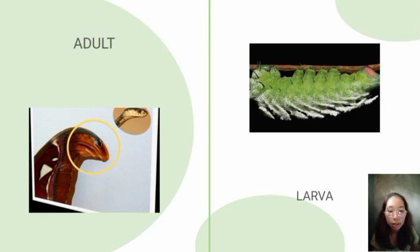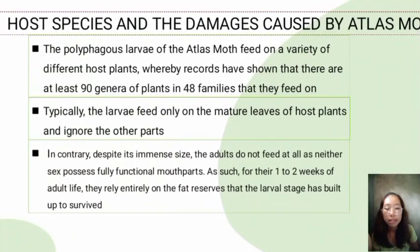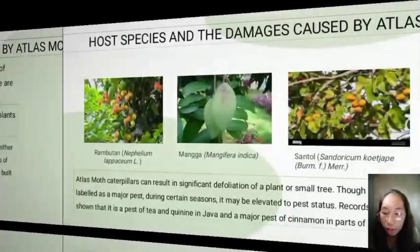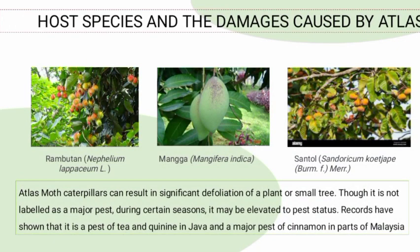Here we have pictures showing how the adult and larva protect themselves from predators. Regarding host species and damages caused by the atlas moth: the polyphagous larvae feed on a variety of host plants — typically only on mature leaves — ignoring other parts. Host plants include Nephelium lappaceum, Mangifera indica, and Sandoricum koetjape. Atlas moth caterpillars can result in significant defoliation of a plant or small tree. Though it is not labeled as a major pest, during certain seasons it may be elevated to pest status.